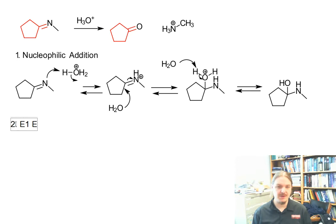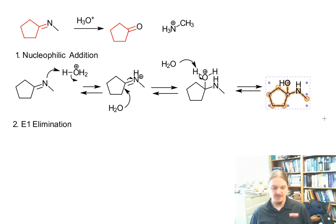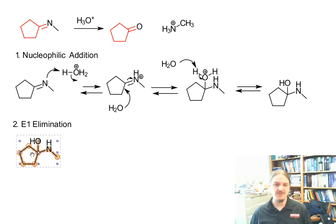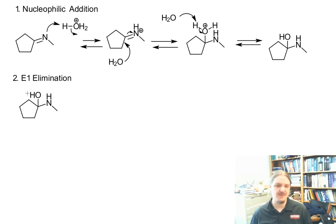The first step of imine formation is a nucleophilic addition. The opposite of that is an elimination reaction. We're in acid. We have weak nucleophiles, weak bases, poor leaving groups. So we're in E1 territory.